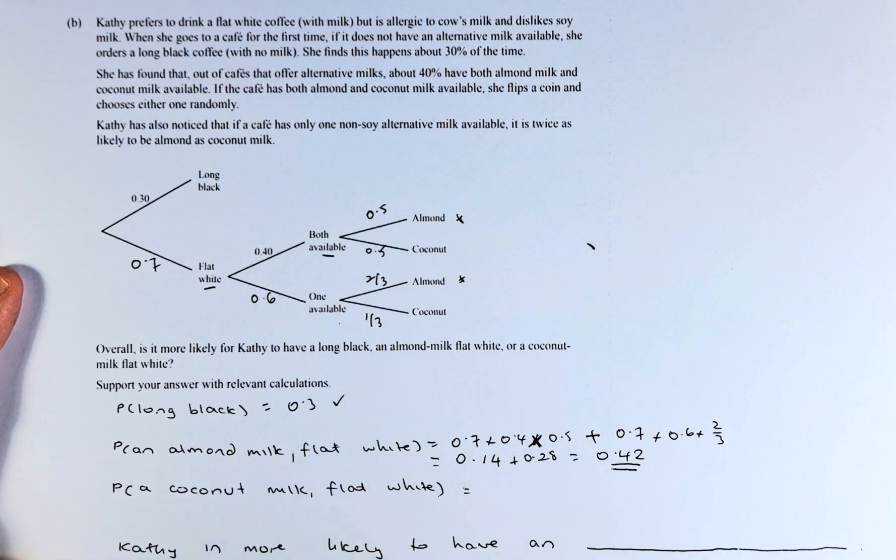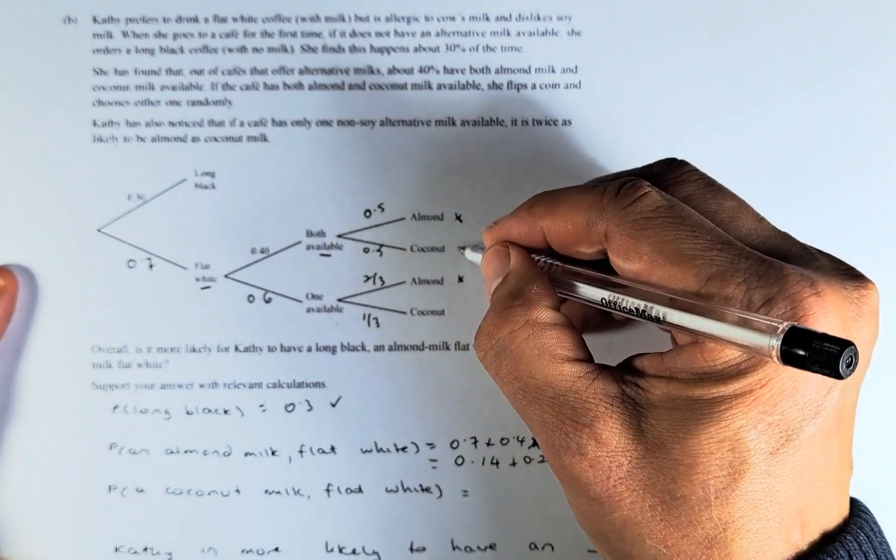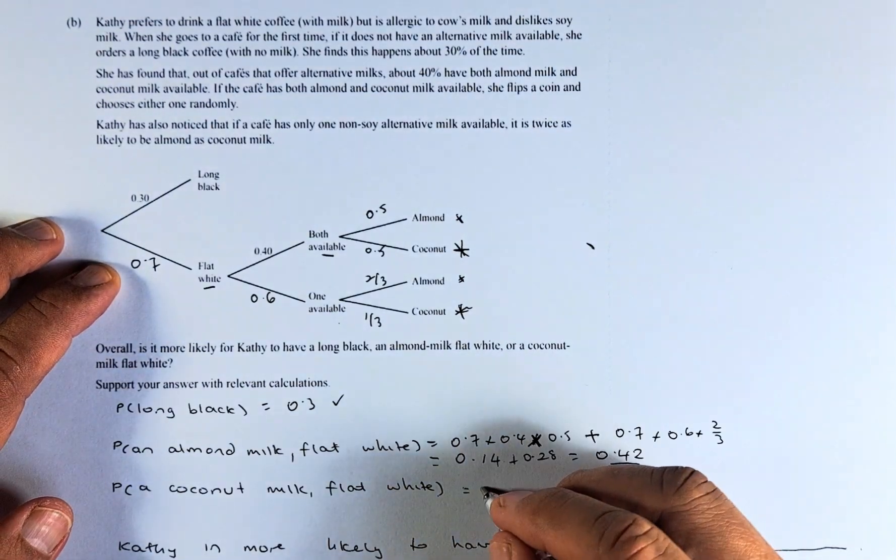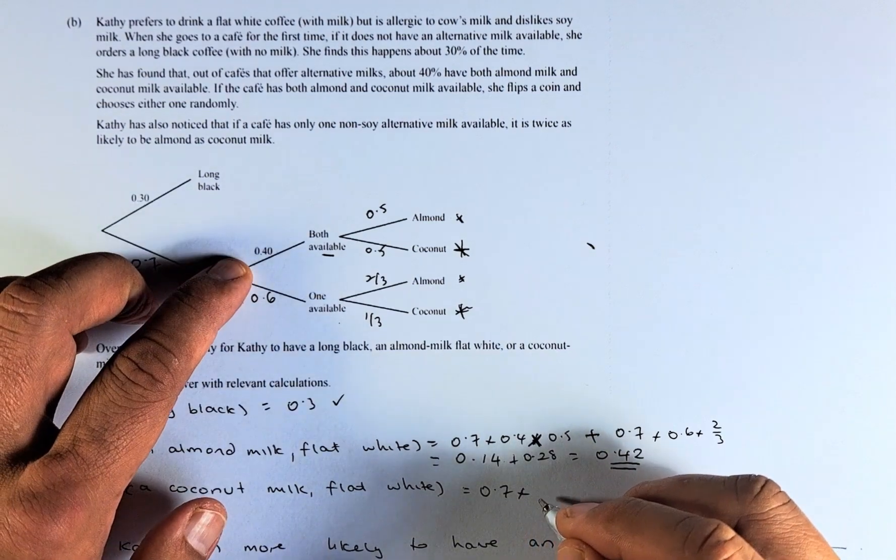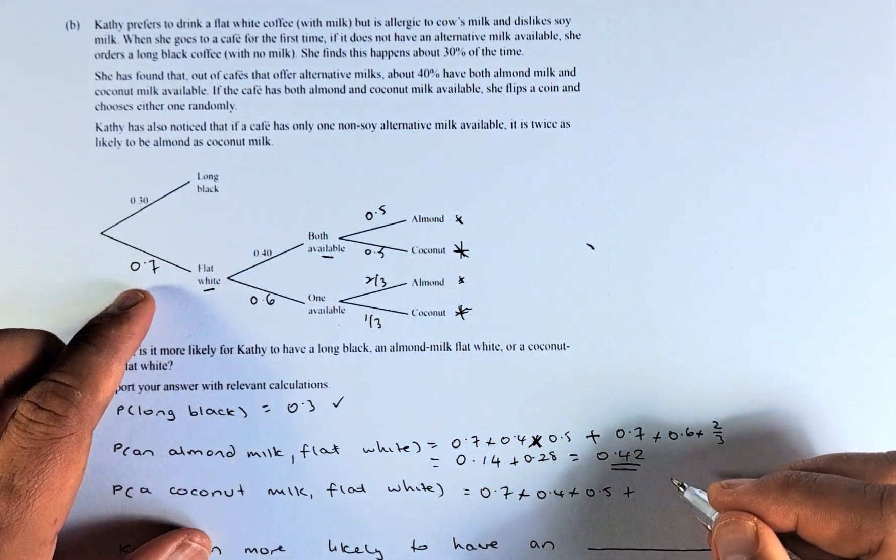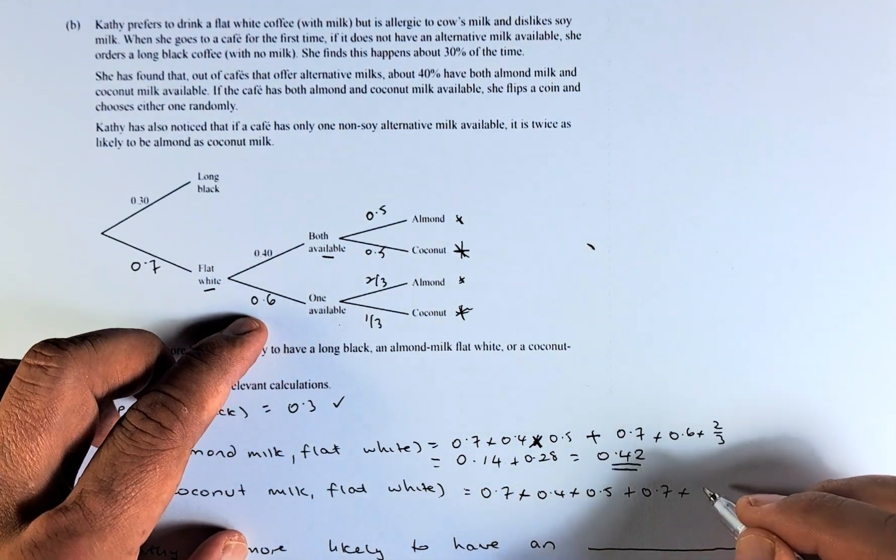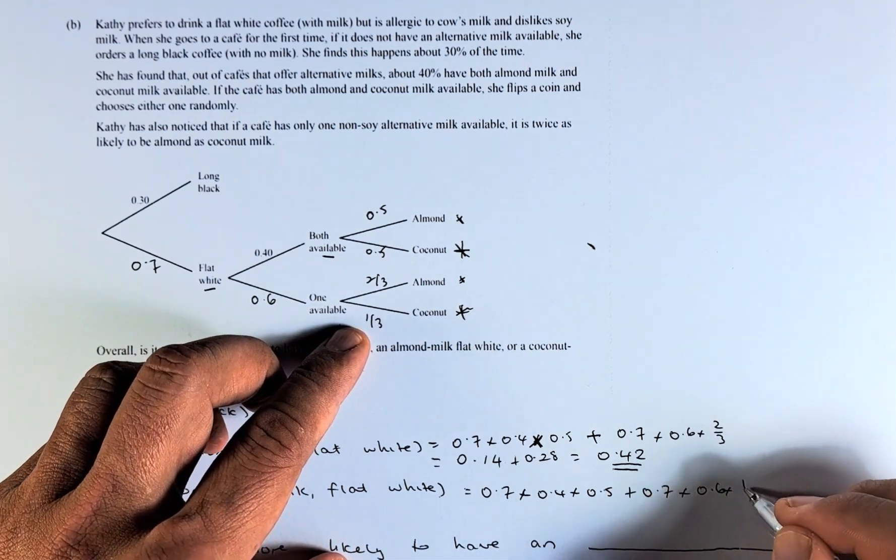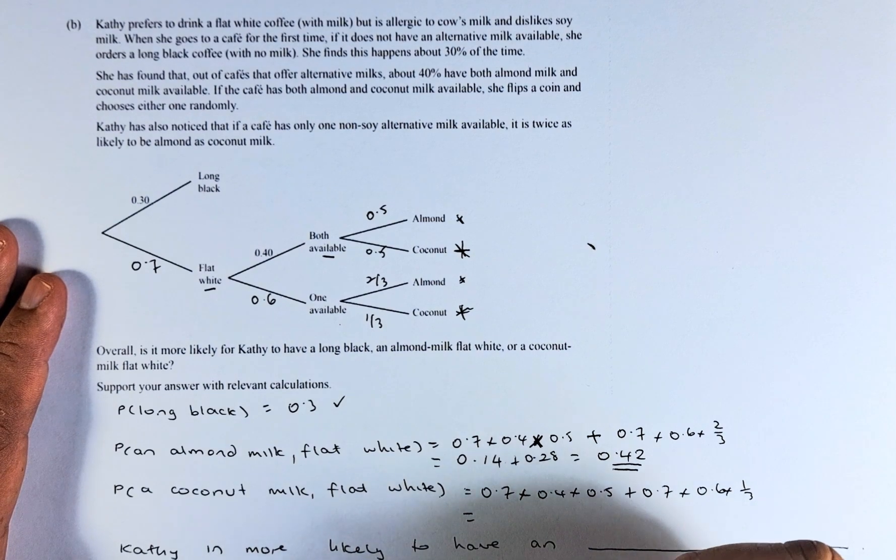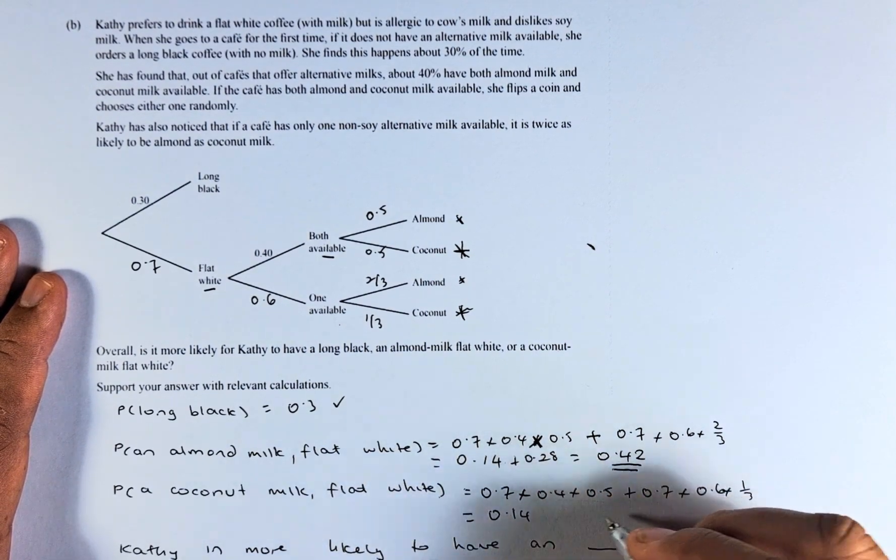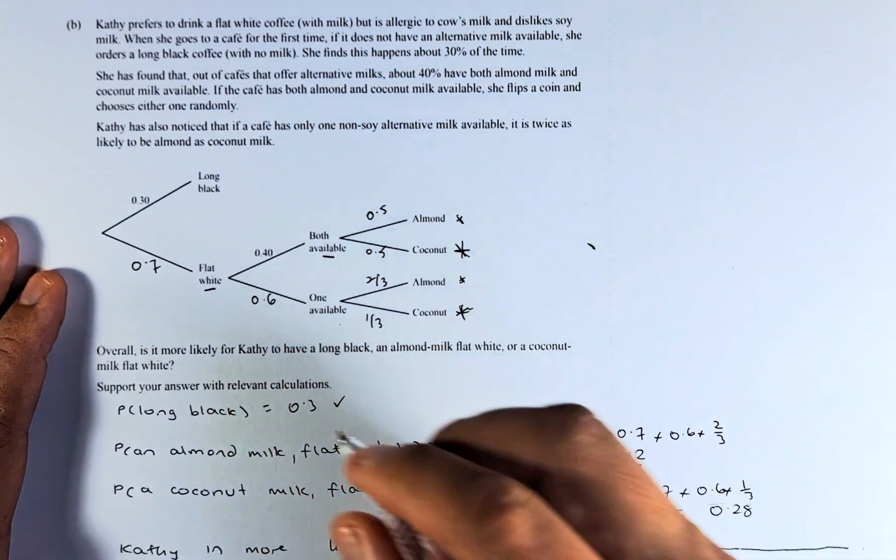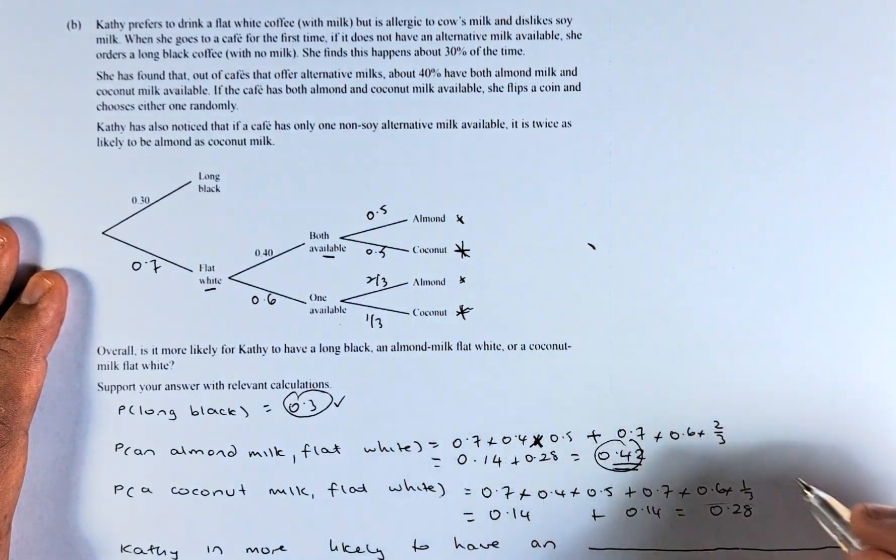Next, we are going to calculate the probability of coconut milk flat white. It is going to be 0.7 multiplied by 0.4 multiplied by 0.5 plus 0.7 multiplied by 0.6 multiplied by 1/3. The first part is going to be the same as 0.14. The second part is also going to be 0.14, and the answer is 0.28. So we have 0.3, 0.42, and 0.28.